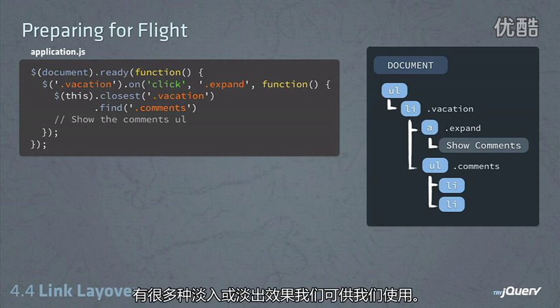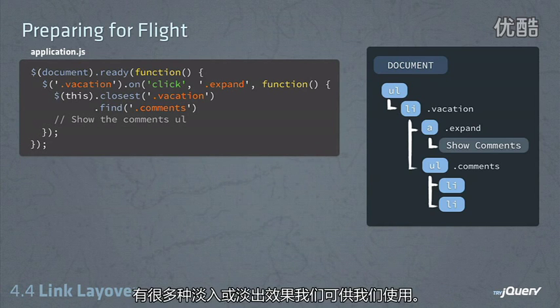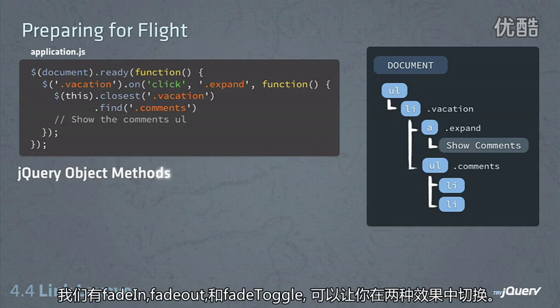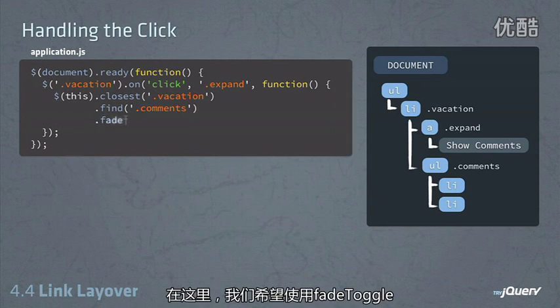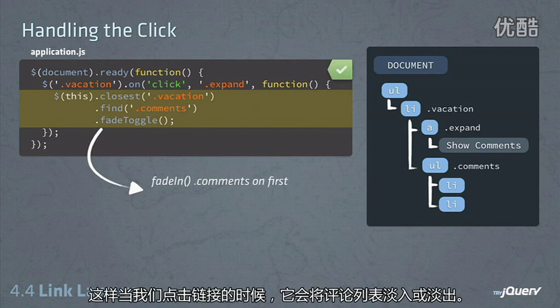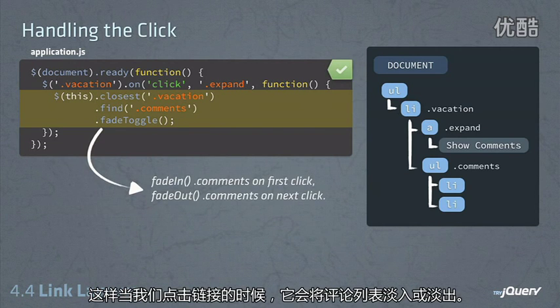So we found the comments list, now we just need to fade it in. There are a couple of different fade methods we can use: we have fadeIn, fadeOut, and fadeToggle, which will toggle between the two. In this case, we want to use fadeToggle so that when we click on the link, it'll either fade them in or fade them out.